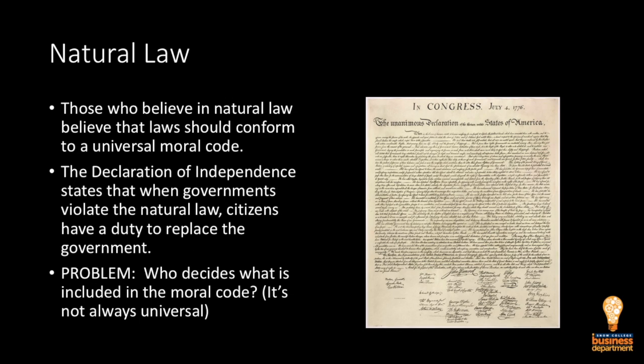The natural law school of thought holds that laws should conform to a universal moral code. The Declaration of Independence is based on the natural law school of thought. It says that when governments violate the natural law, citizens have a duty to replace the government — that's the whole idea around the Declaration of Independence. King George, you're violating the natural law, so as citizens we have a duty to form our own government that does conform to the natural law.